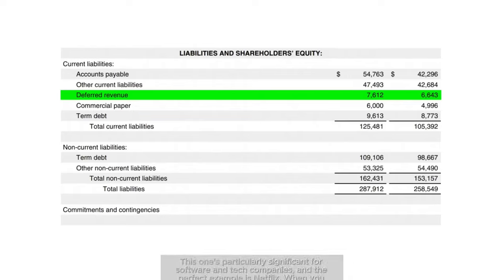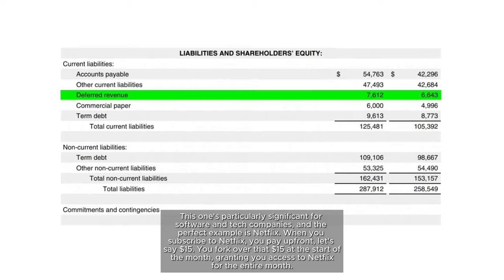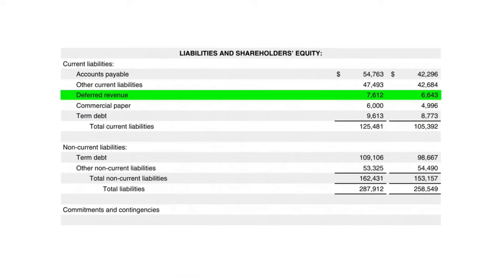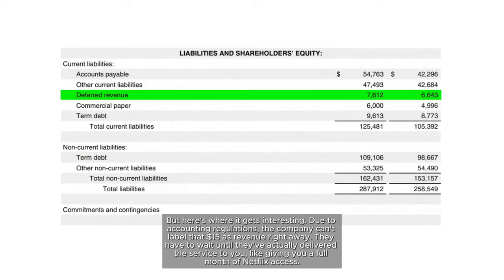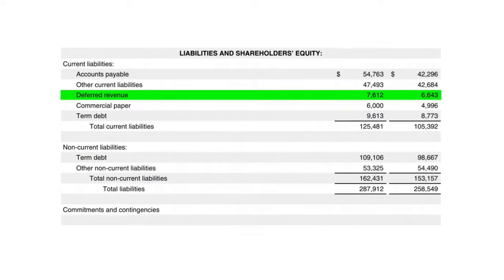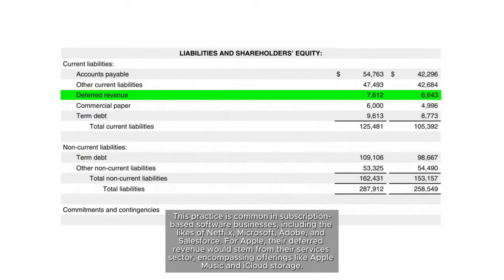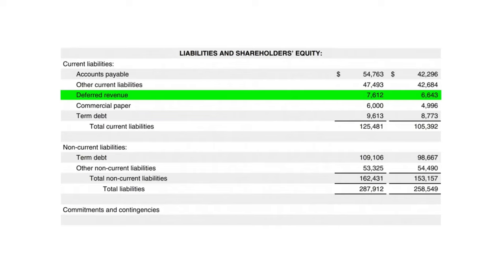Let's dig into deferred revenue — particularly significant for software and tech companies, with Netflix being the perfect example. When you subscribe to Netflix and pay $15 upfront, due to accounting regulations the company can't label that $15 as revenue right away. They have to wait until they've actually delivered the service — a full month of access. Until then, that $15 sits in deferred revenue. This practice is common in subscription-based businesses like Netflix, Microsoft, Adobe, and Salesforce. For Apple, deferred revenue stems from services like Apple Music and iCloud storage.